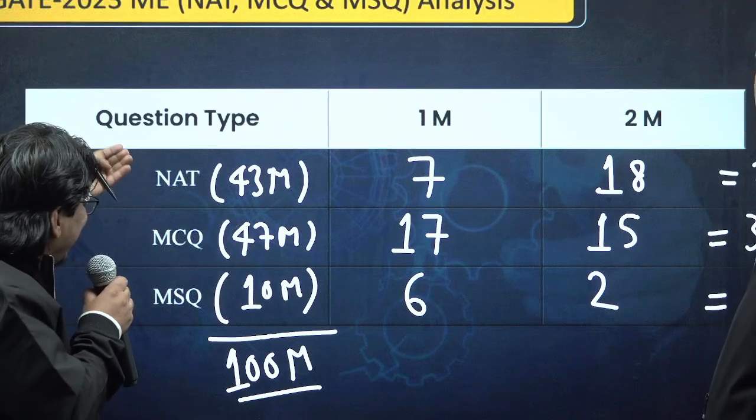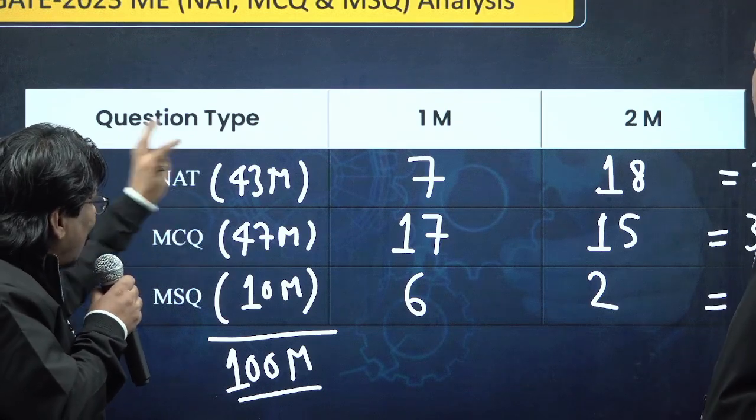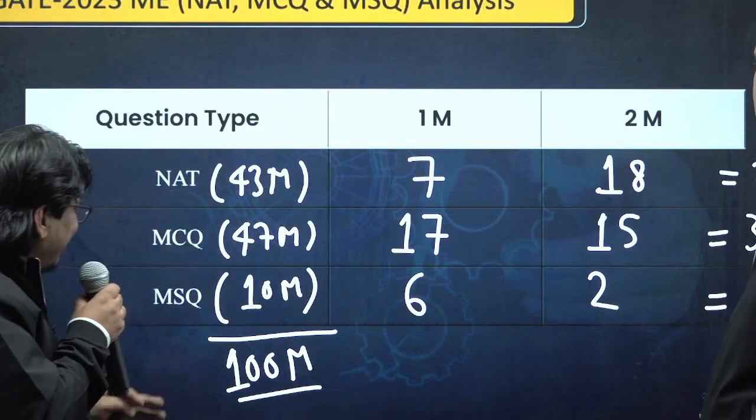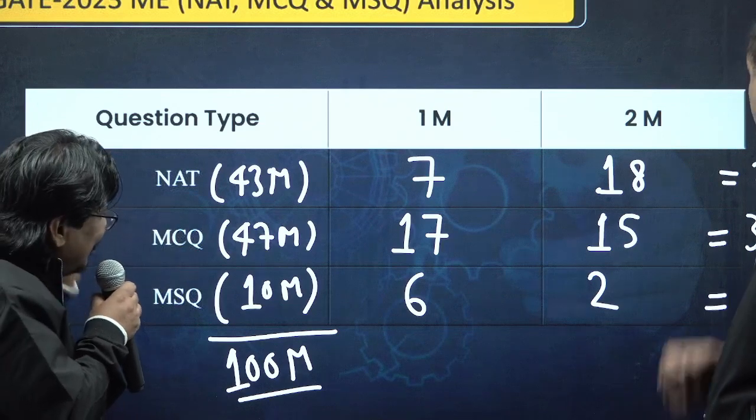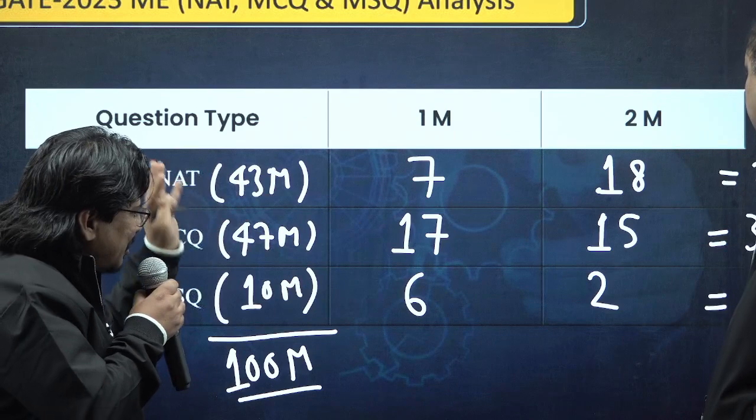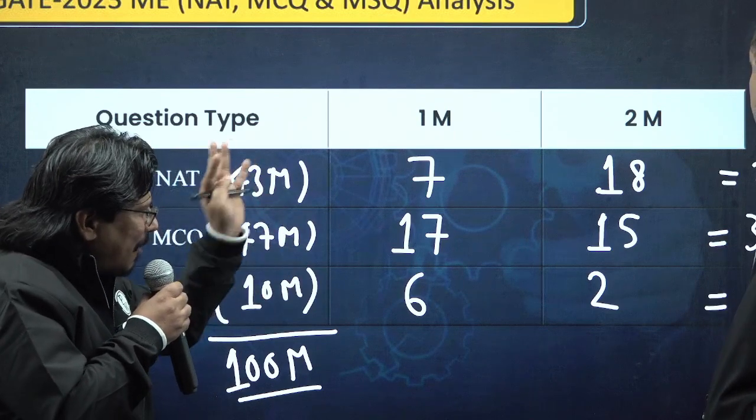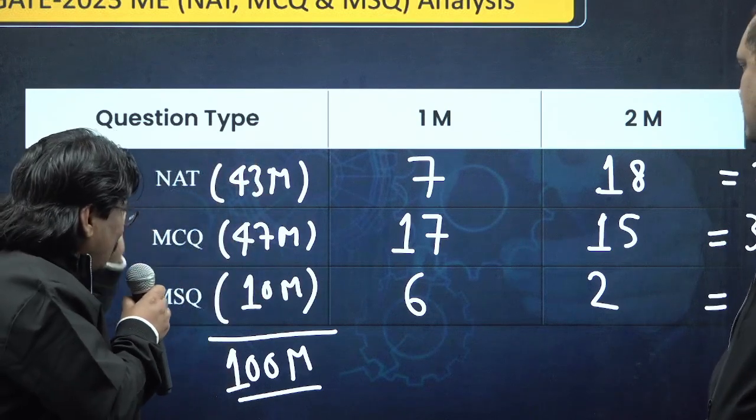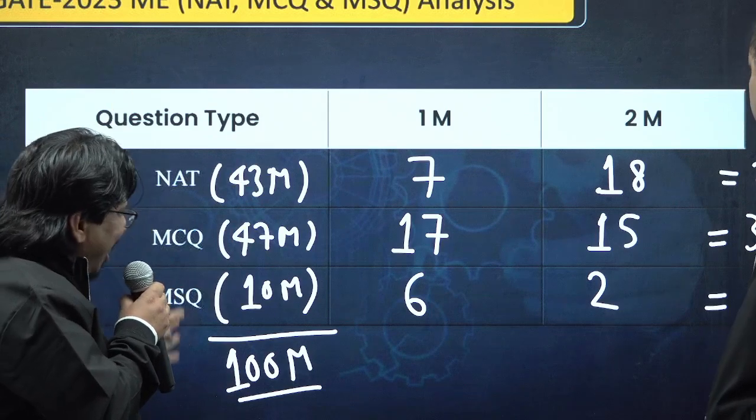If you observe carefully, the weightage of NAT and MCQ is quite similar, very near to each other. As far as MSQ (multiple select questions) is concerned, there are 8 questions total: 6 questions of one mark each and 2 questions of two marks each, totaling 10 marks. So total marks 100, total number of questions 65.